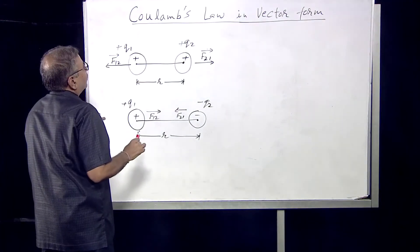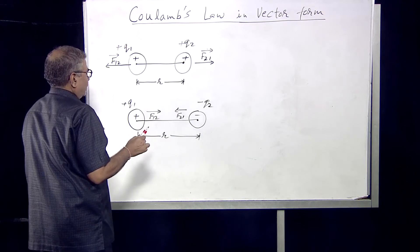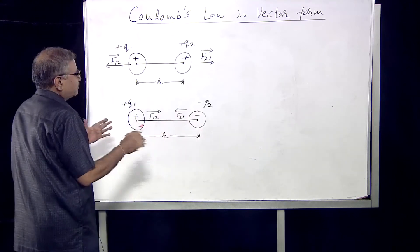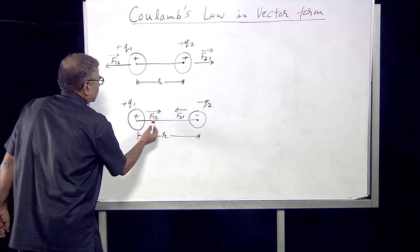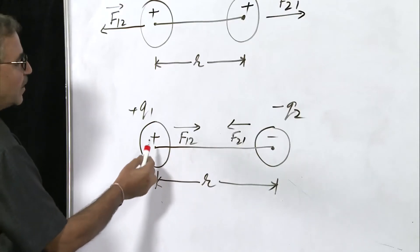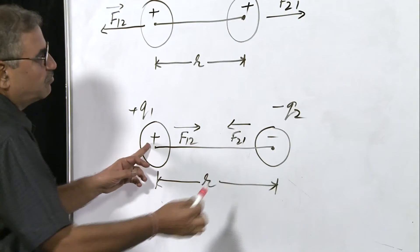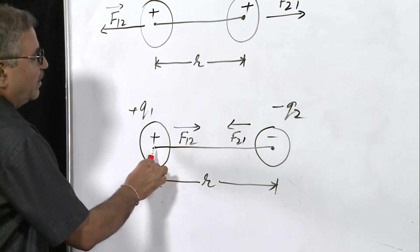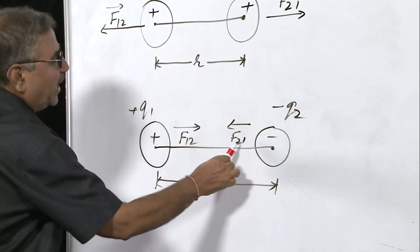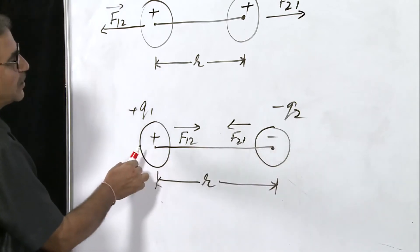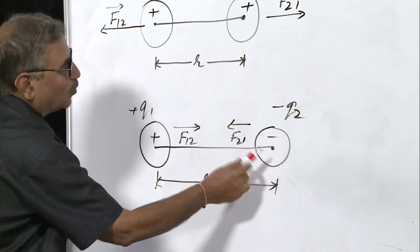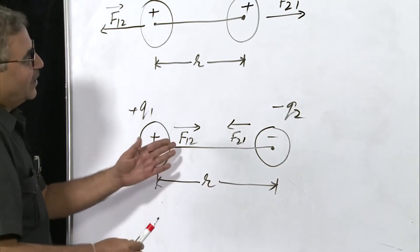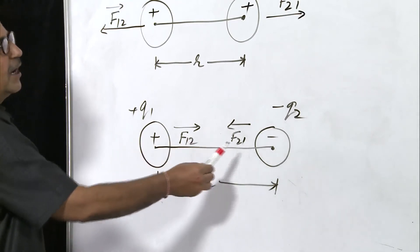Now, if one of the charges is negative — means q1 is a positive charge and q2 is a negative charge — then what happens to the forces between these two charges? f12 will be a force of attraction because this is a positive charge and this is a negative charge, so it will be attracted towards it. f12 will be in the direction from left to right, and the negative charge will be attracted by the positive charge, so the force on two due to charge one will be from right to left. Again, f12 and f21 are oppositely directed.